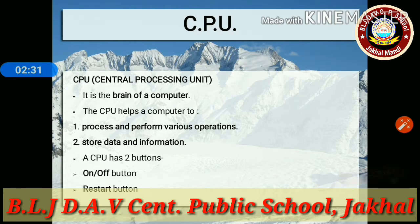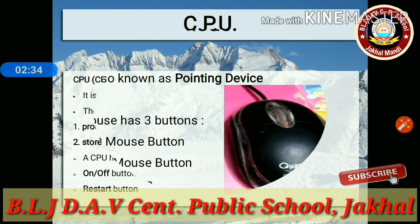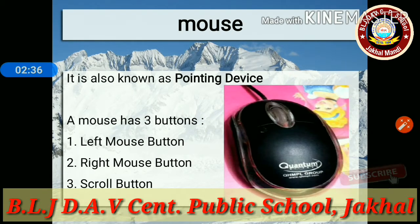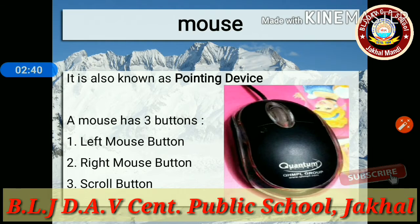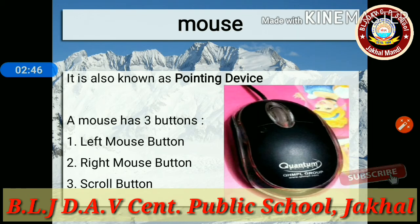The CPU has two buttons: the on/off button and the restart button. Next is the mouse. It is also known as a pointing device. A mouse has three buttons: the left mouse button, the right mouse button, and the scroll button.